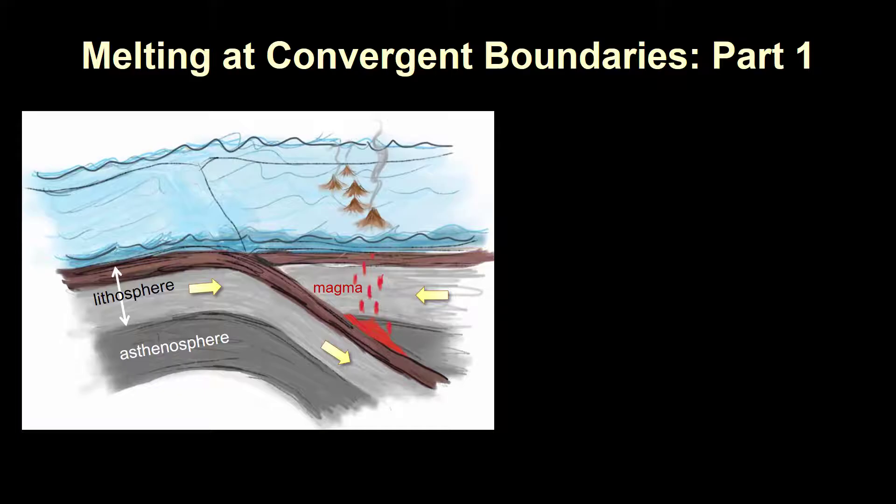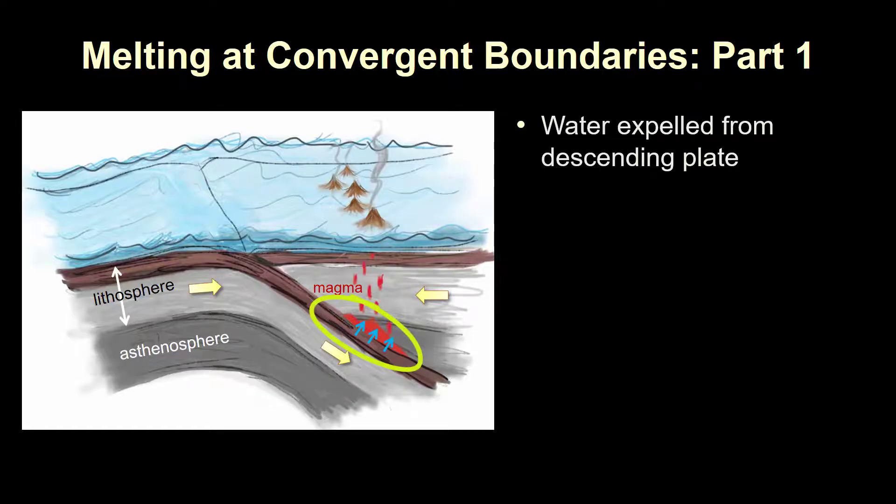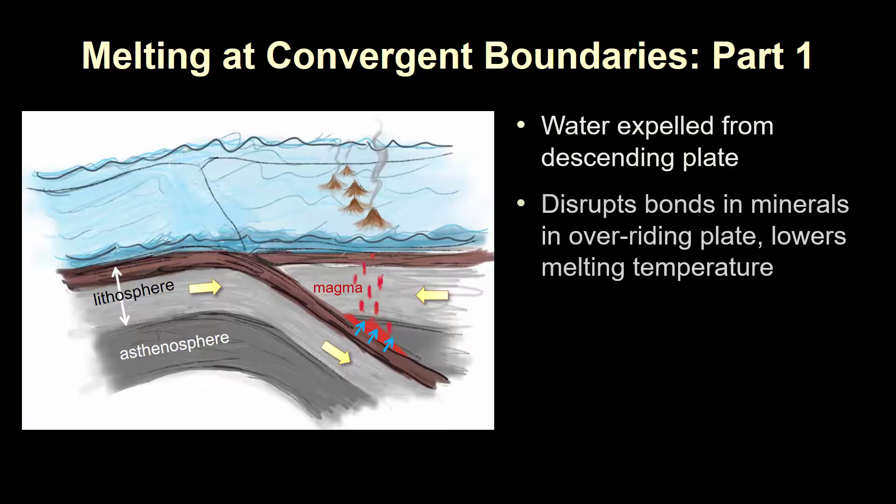Turns out that water-rich minerals in the descending plate are compressed in the subduction zone, and the water is squeezed out of the minerals and into the much hotter mantle rocks immediately above. The addition of this water causes these rocks to melt. This process is known as flux melting.